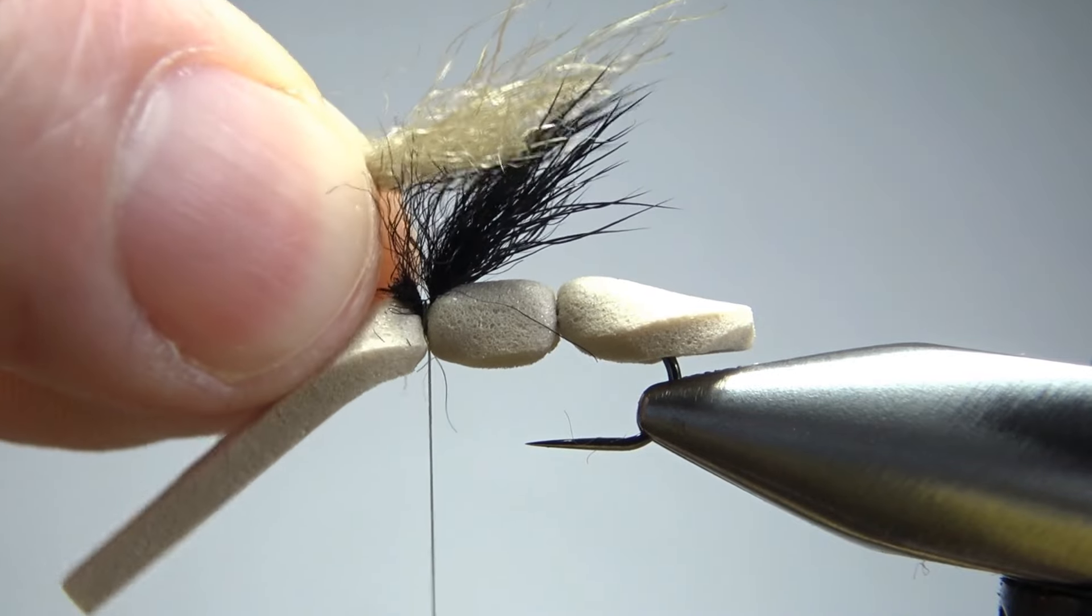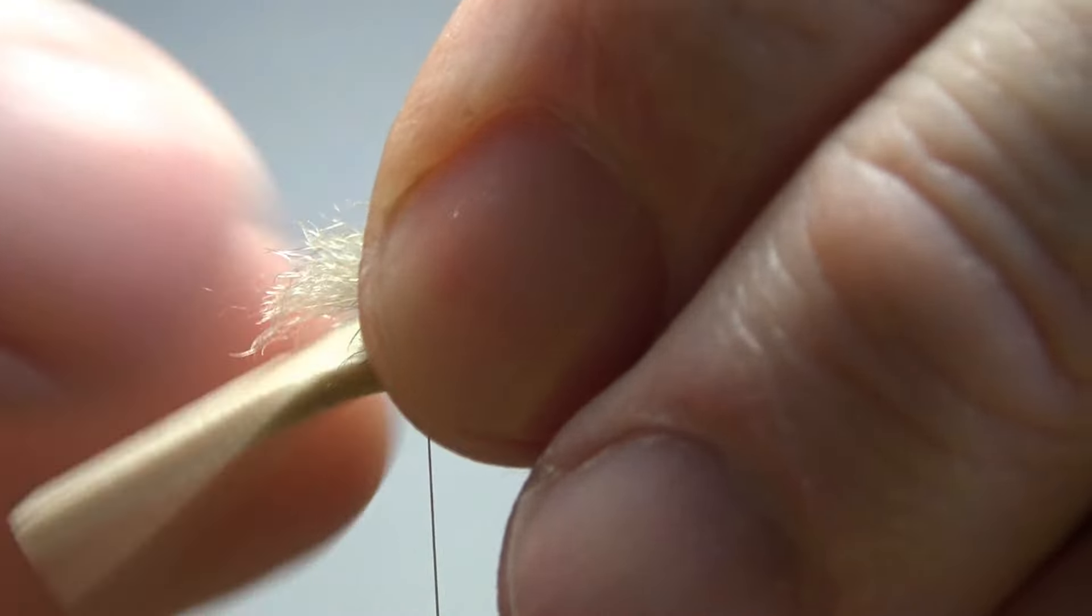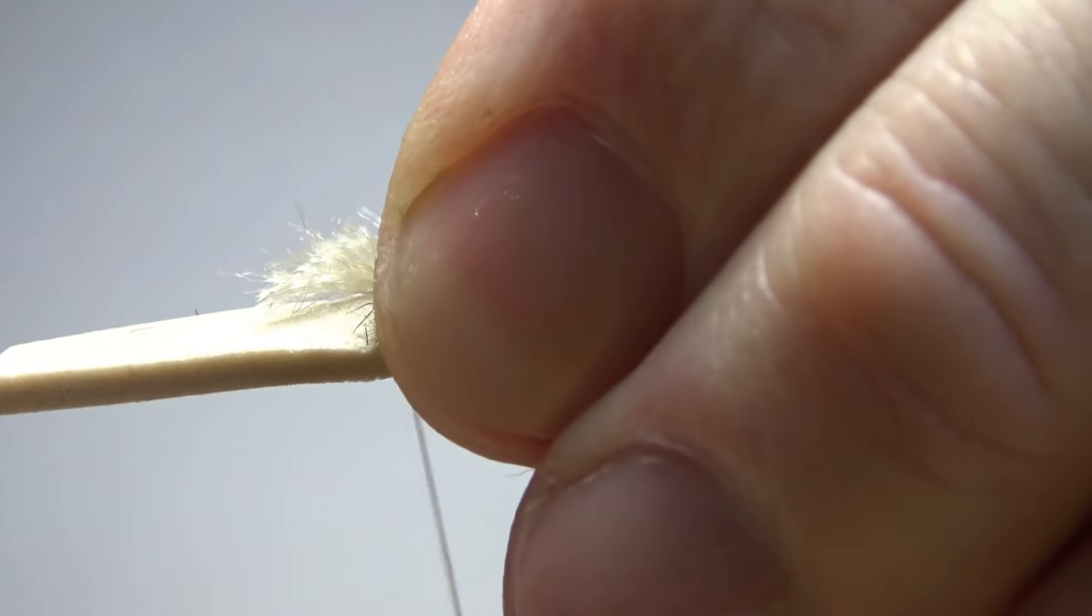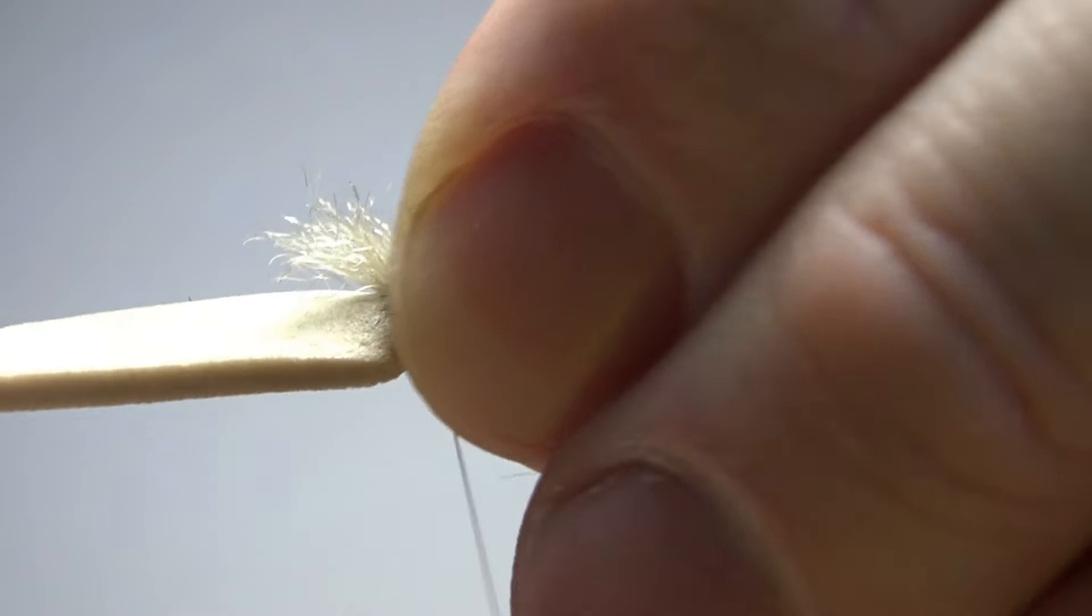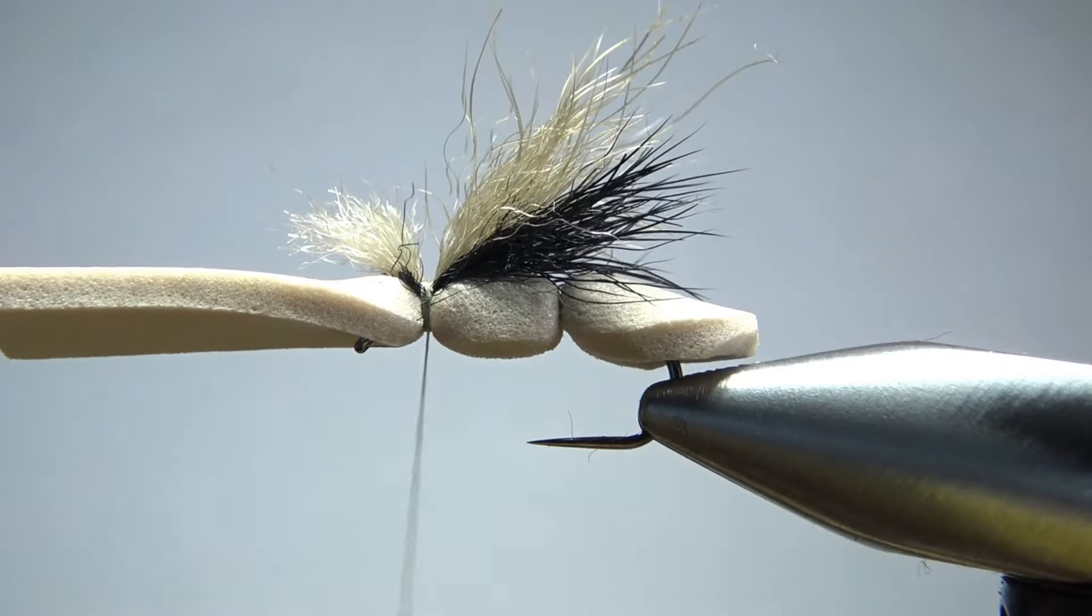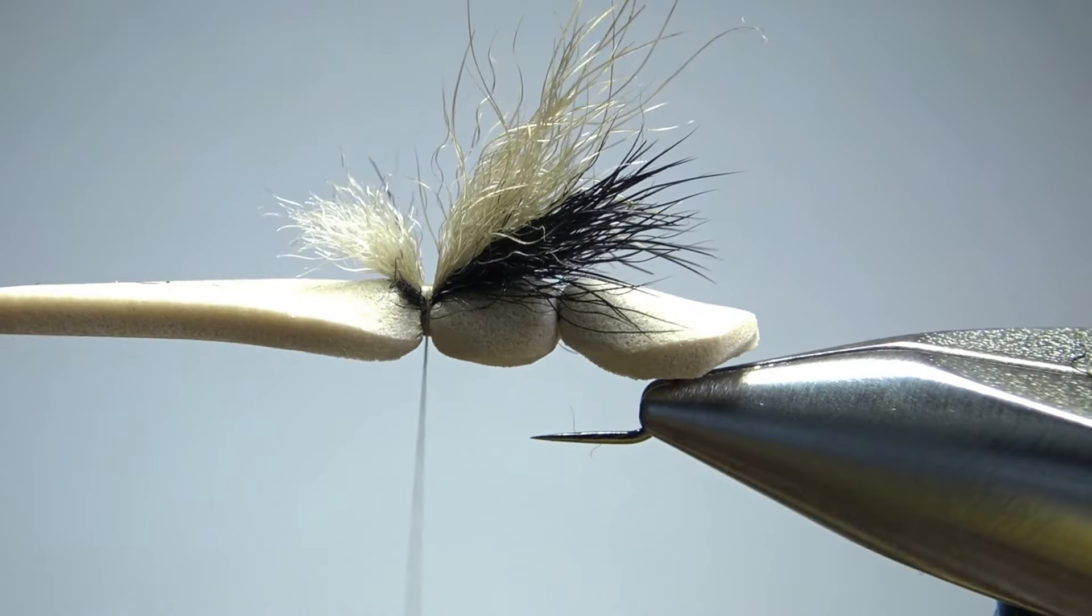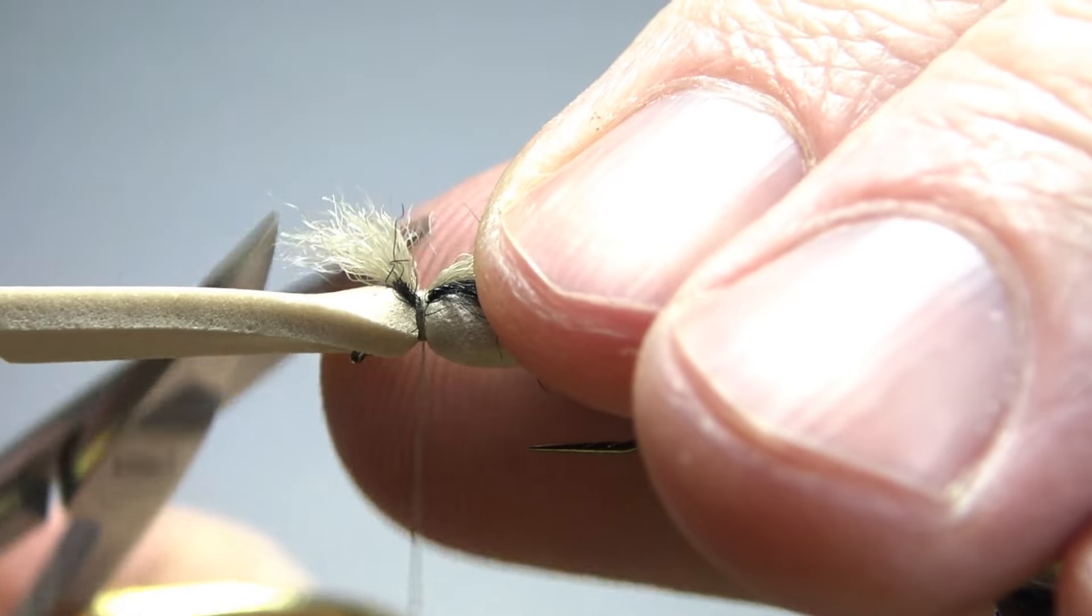Okay, we'll lay this one on top and then just catch it in the same way. Three or four medium wraps right here. Okay, I think that's going to work. I'm going to go ahead and give this a little trim as well.